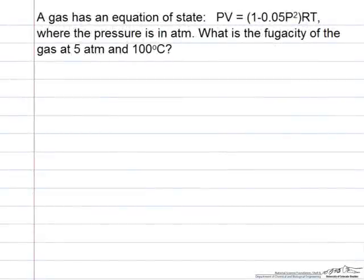In this problem we have an equation of state, again a simplified equation of state to make calculations easy. The units are such that pressure is in atmospheres. We want to calculate the fugacity of this gas at 5 atmospheres and 100 degrees C.